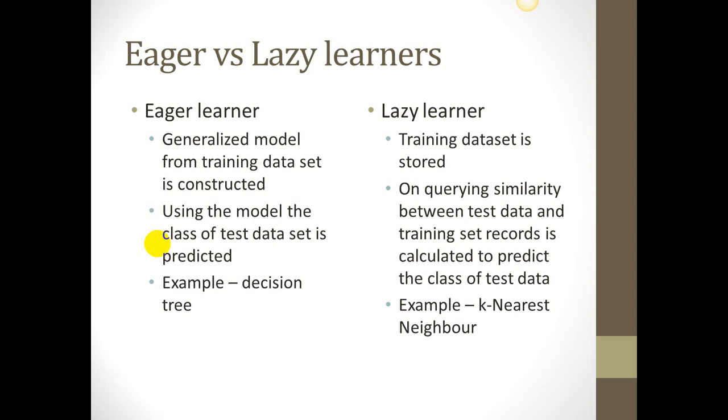There are another type of learning models which are called lazy learners. In these types of models, the training dataset is actually stored and no generalized model is constructed. In fact, when a query is made to such a system, the prediction about the class is provided by finding similarity of the test case with the training dataset rows or records.